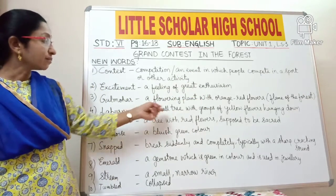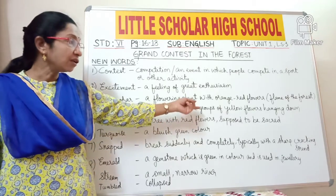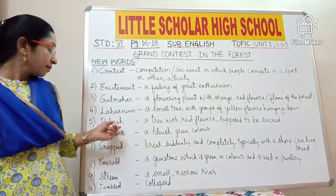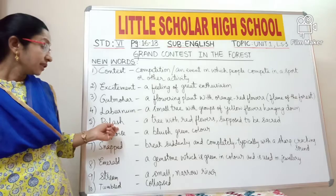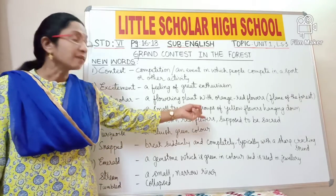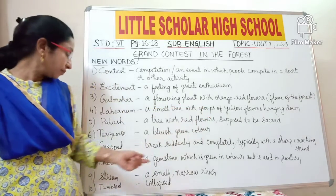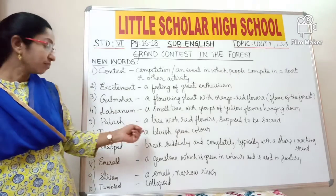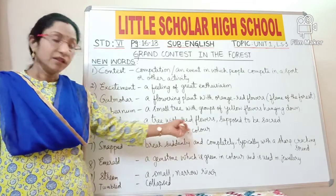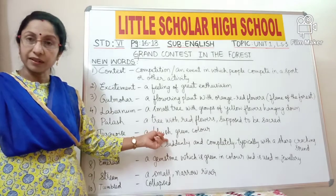Laburnum — it is a small tree with groups of yellow flowers which hang down. Palash — it is a tree with red flowers and is supposed to be very sacred. Turquoise — it is a bluish-green colour which you find generally in the feathers of the peacock.